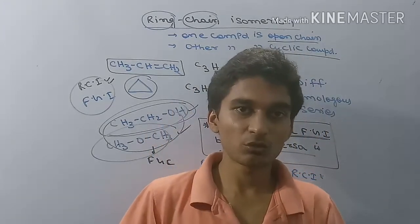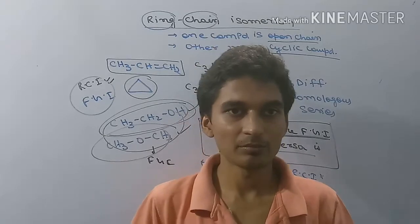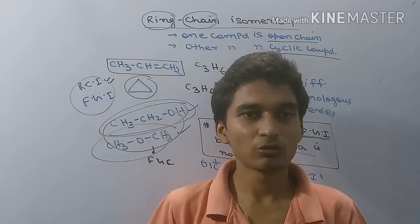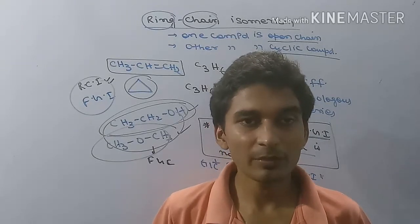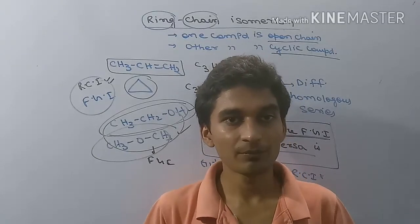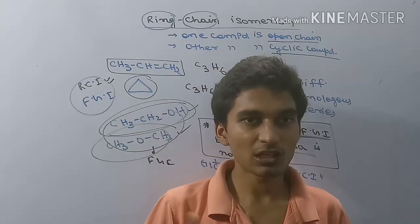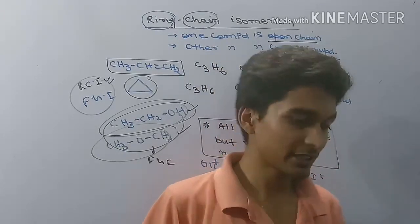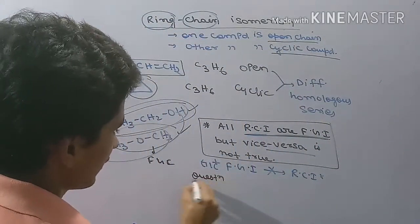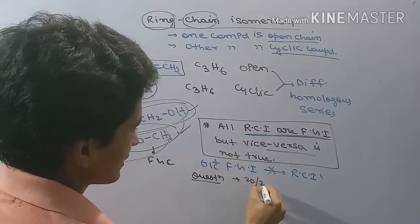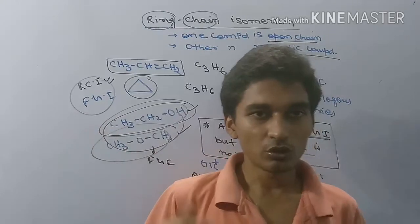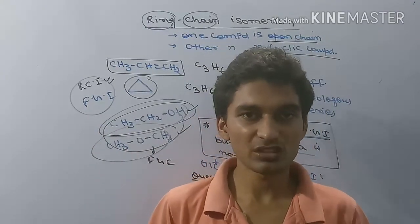So in summary, we have discussed the organic chemistry concepts of functional group isomerism and ring-chain isomerism as types of structural isomerism. For practice, there are 20 to 25 questions to work through. These questions will be discussed in the group — check the WhatsApp group for practice questions.